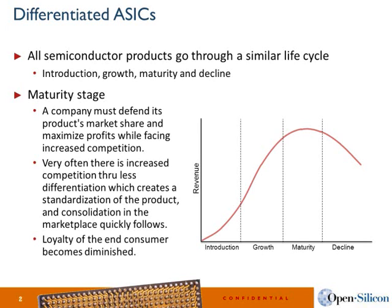As products become more and more standardized, it becomes less and less possible to differentiate. The loyalty of the end customer also becomes diminished. I truly believe that if we can delay the maturity curve, we'll see a longer lasting product line. As the IP in the product becomes standardized and there is an inability to differentiate, the product itself becomes less differentiated, and as the semiconductor is sold to the end product, the end product becomes less differentiated as well.